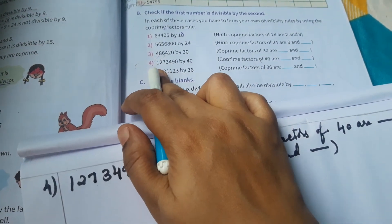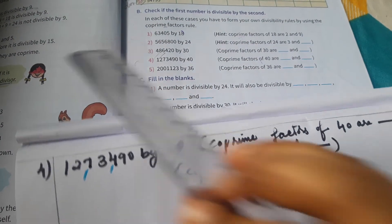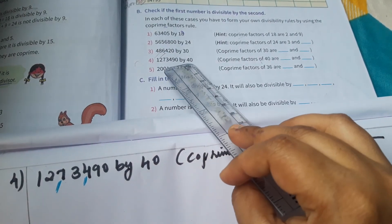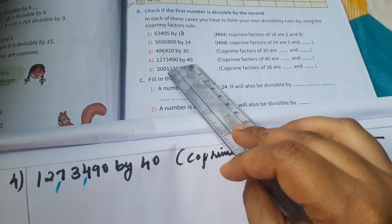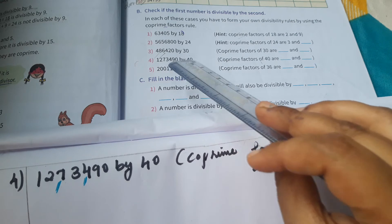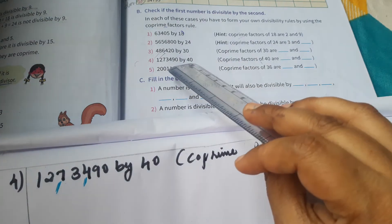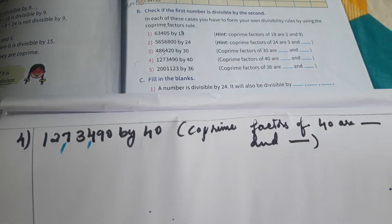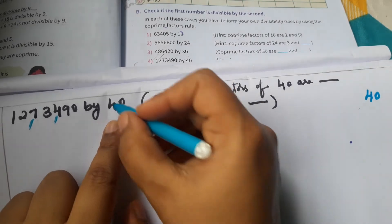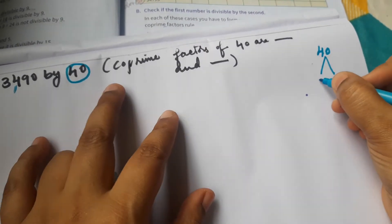Fourth question: 12,73,490 divided by 40 — is this number perfectly divisible by 40? It is not necessary to directly check with 40. We find the co-prime factors of 40.